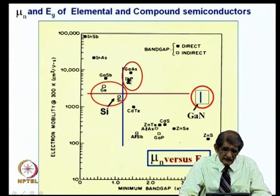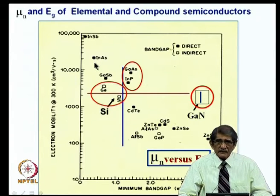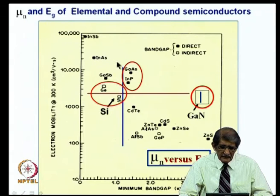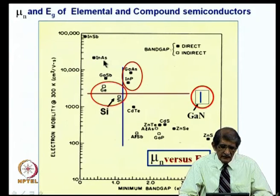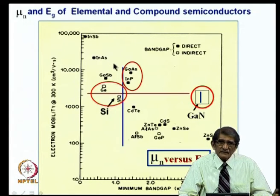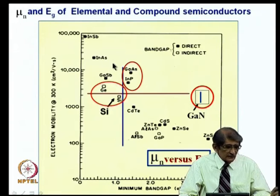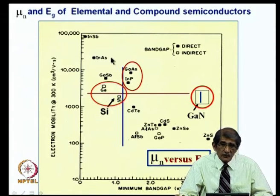Gallium arsenide has higher mobility, and indium arsenide has even much higher — up to 20,000 cm² per volt-second. But if I can combine gallium arsenide and indium arsenide to make a ternary alloy, I can have the combined effect: higher mobilities than gallium arsenide, but bandgaps better than that of indium arsenide. One looks at materials like indium gallium arsenide, which are ternaries. So when you go into compound semiconductors, you have a variety of choices in terms of binaries, ternaries, and quaternaries.